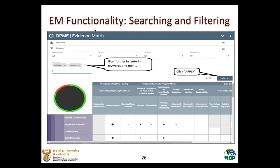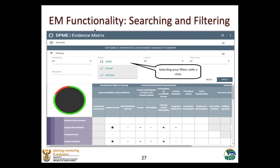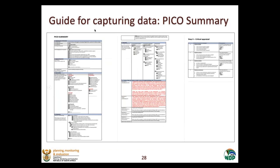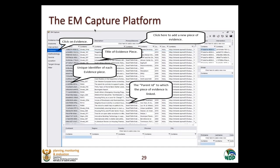It also enables us to filter. You can filter using keywords and apply, or just select your filters with a click, which is built in on the back end the way we want it. When it comes to capturing on the back end, we get guided in terms of what we capture. In this case, we used a PICO summary — PICO stands for Population, Intervention, Comparator, and Outcome — which guides the whole data capturing process. I'm going to give you a quick glimpse of what our evidence map capture platform looks like at the back end. This is where the magic happens.